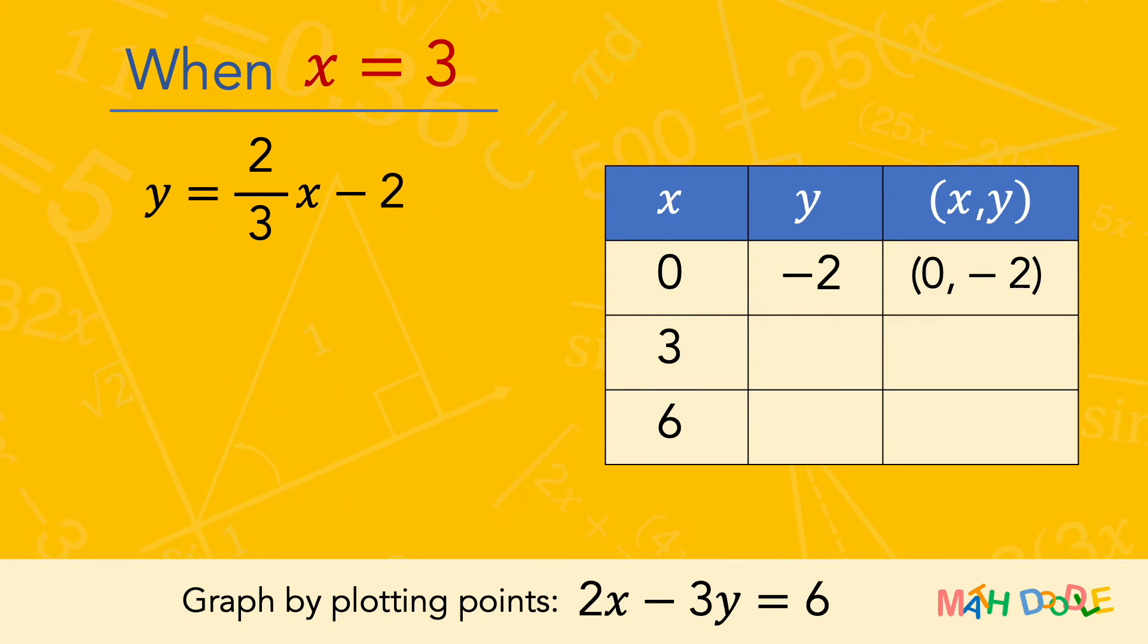Next, to find the value of y when x is 3, we are going to substitute 3 for x. 2 thirds times 3 is 2, and 2 minus 2 is 0. So, when x is 3, y is 0.